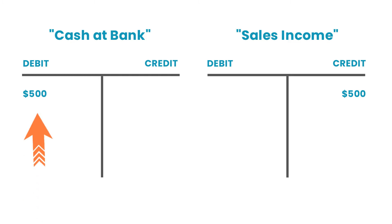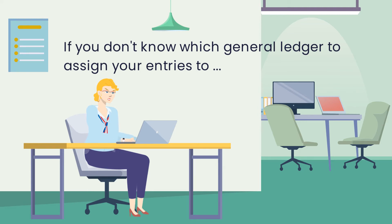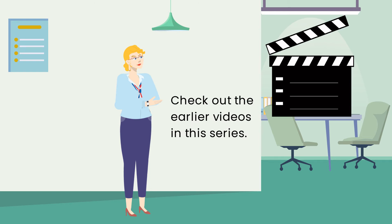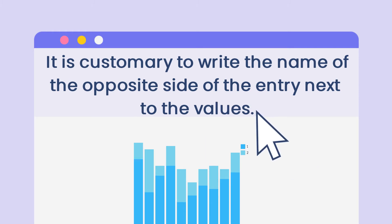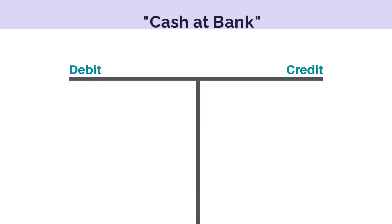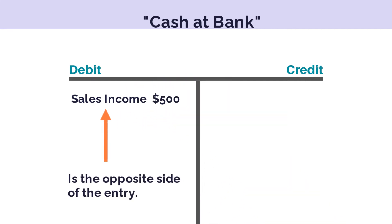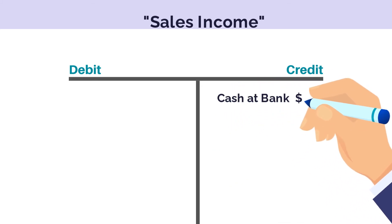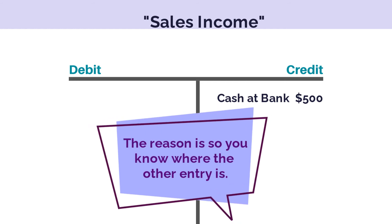As you can see, we have $500 of debits and $500 of credits, which means the transaction balances in our set of accounts. If you don't know how to work out which General Ledger accounts to assign those entries to, or you don't know how to decide which entry should be a debit and which should be a credit, check out the earlier videos in this series. To finish off these two T-accounts, it is customary to write the name of the opposite side of the entry next to the values. So in the Cash at Bank T-account, you would write Sales Income beside the $500 debit, because Sales Income is the opposite side of the entry. Likewise, you would write Cash at Bank beside the $500 credit in the Sales Income T-account. The reason we do this is so we can easily see where to find the other side of the transaction.